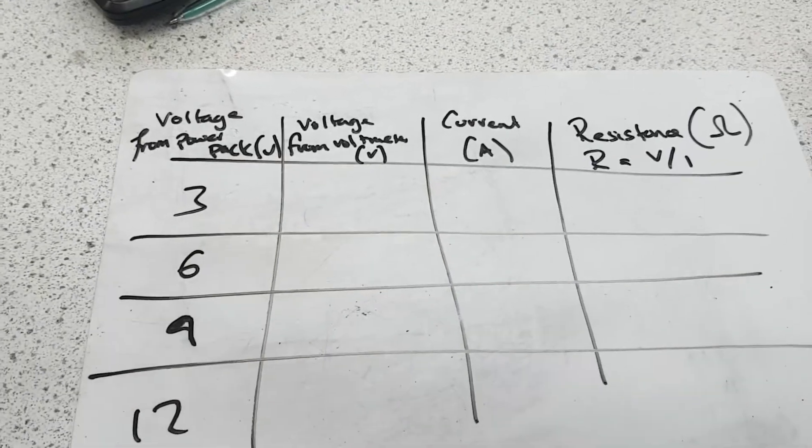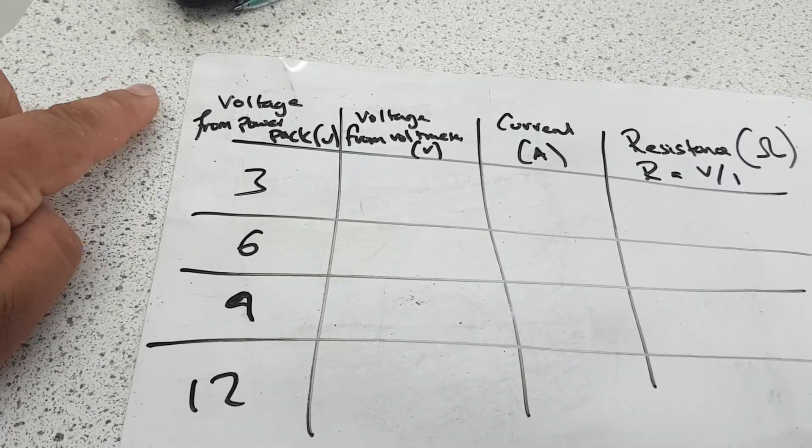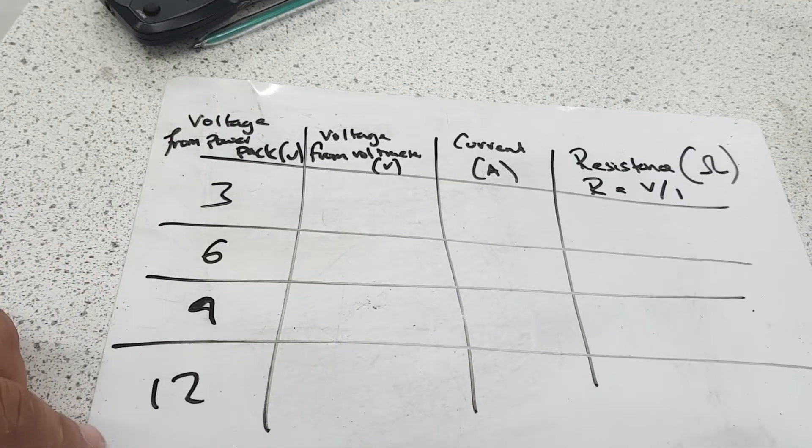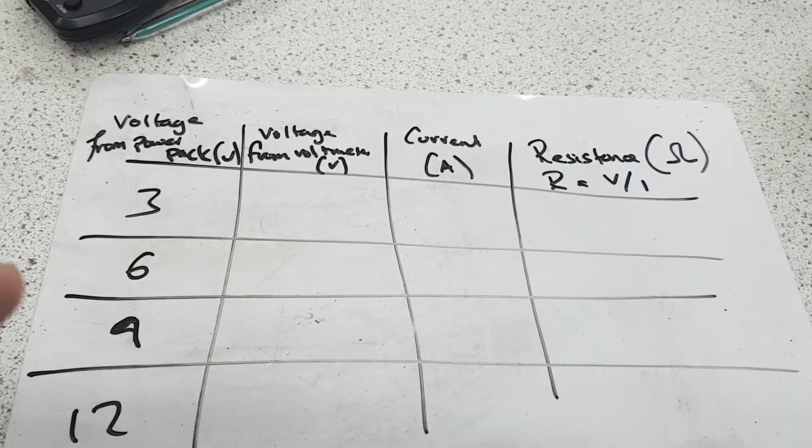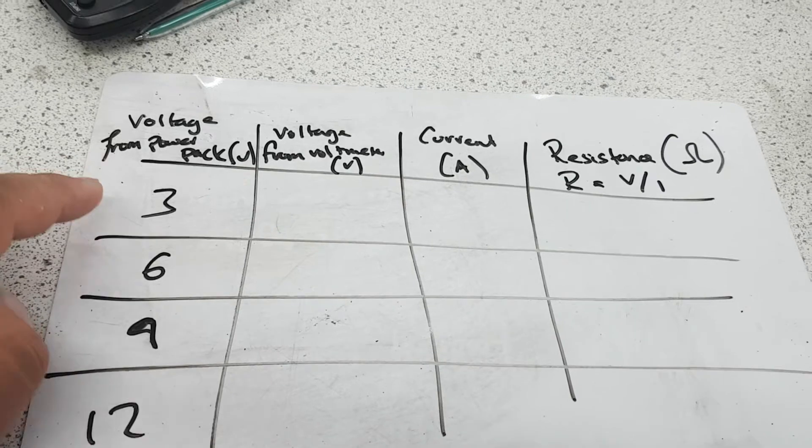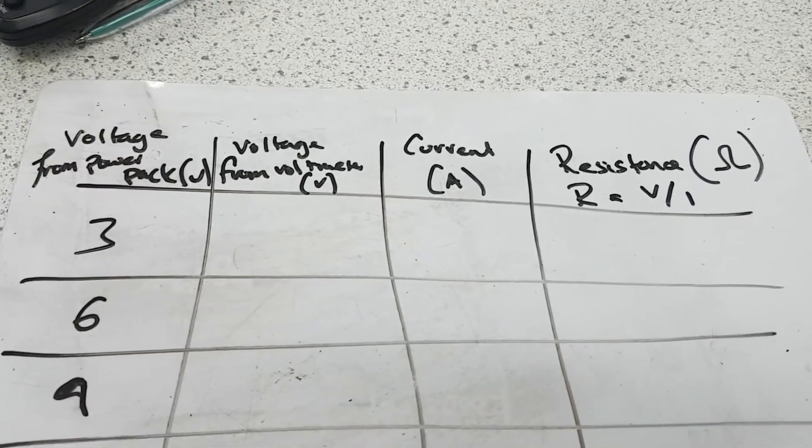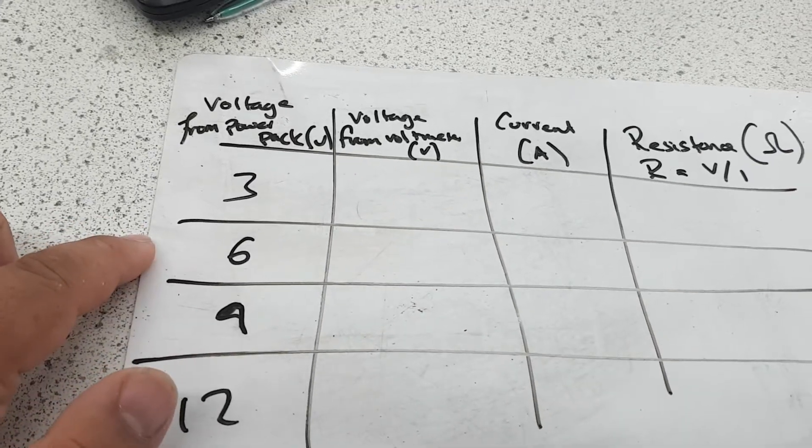Now our investigation can be explained using this table here. We've got voltage from the power pack, so we're going to go with 3, 6, 9, and 12 volts. And what we're going to do is once you set it to 3 volts, you're going to measure the current, the voltage from the voltmeter, and the current. Then you're going to move it up to 6 volts, measure voltage and current.